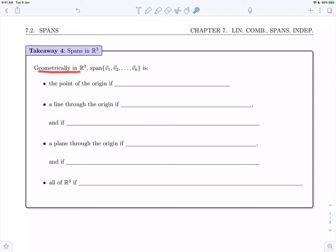So geometrically in R3, the span of a collection of vectors v1, v2, up to vk is the point of the origin if those generating vectors are all 0.